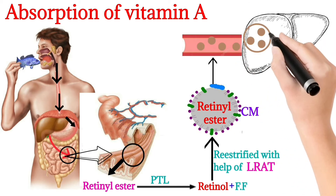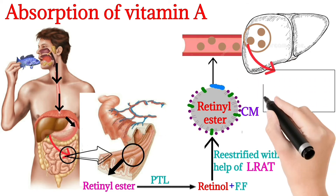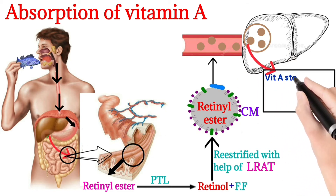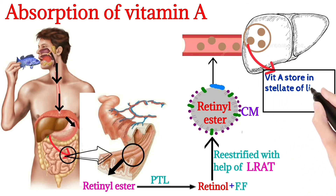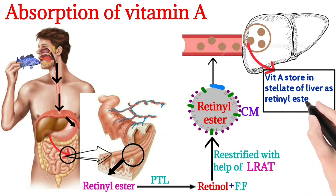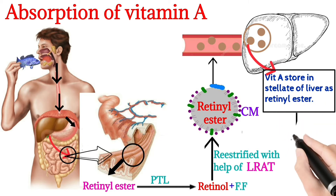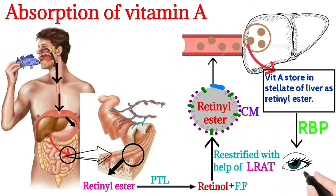The retinyl ester enters the blood and lymphatic system and goes to the liver. In the liver, Vitamin A is stored in stellate cells as retinyl esters. With the help of retinol-binding protein, it is transported to target organs like the eyes and bones.